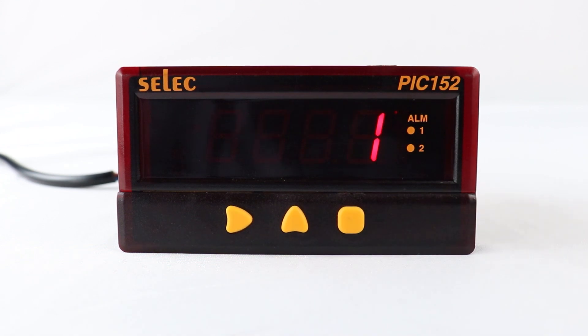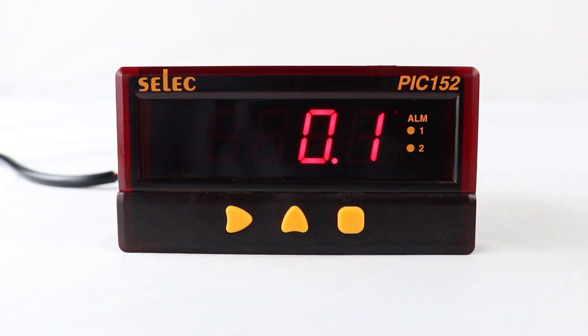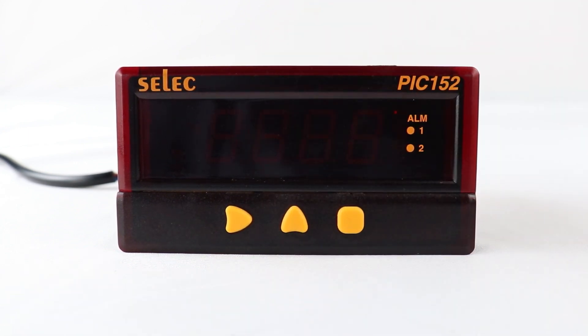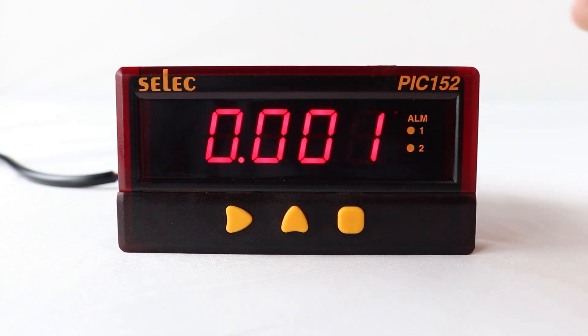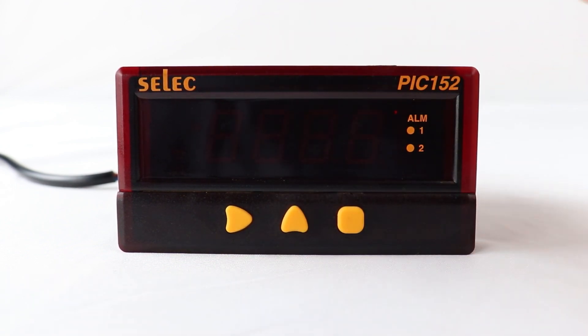Then press square key to select resolution, which is selectable between 1 and 0.1 for thermocouple, and in case of analog input, among 1, 0.1, 0.01, and 0.001, by pressing up arrow key.